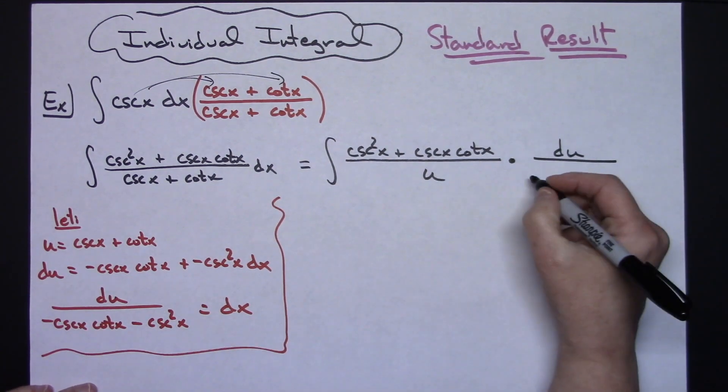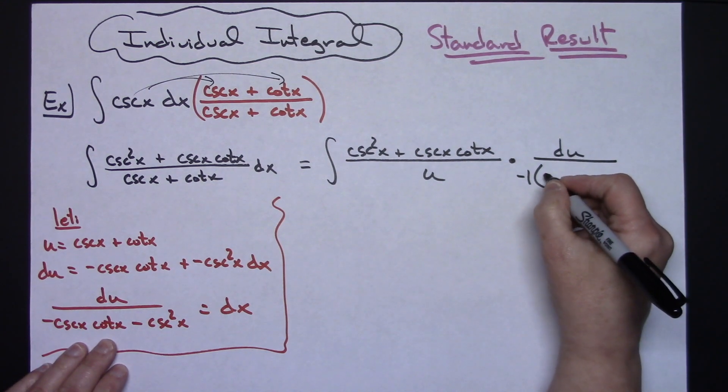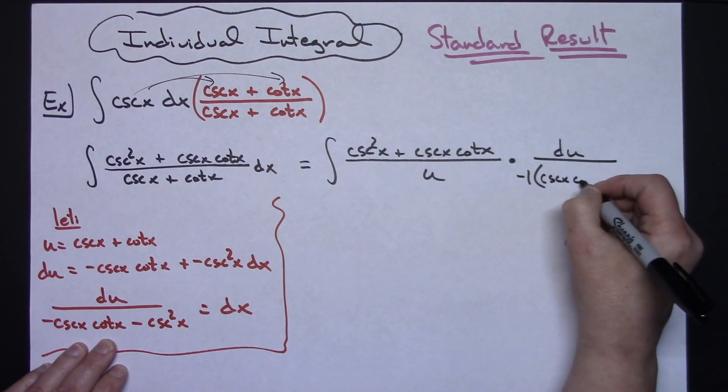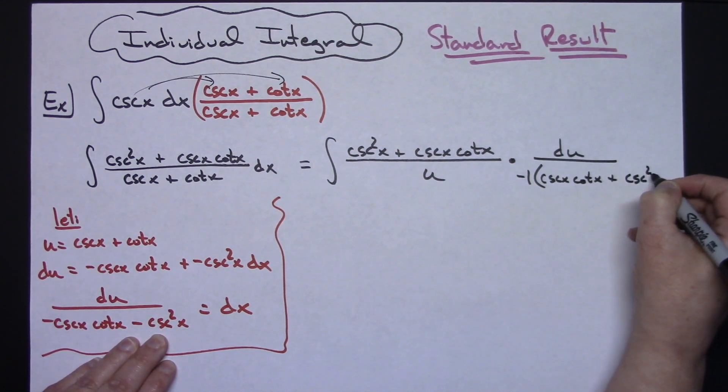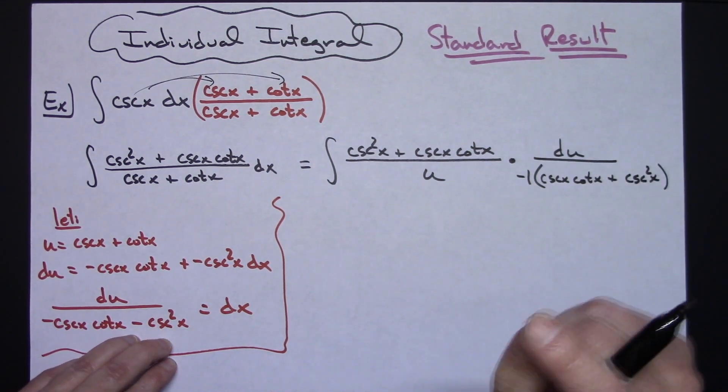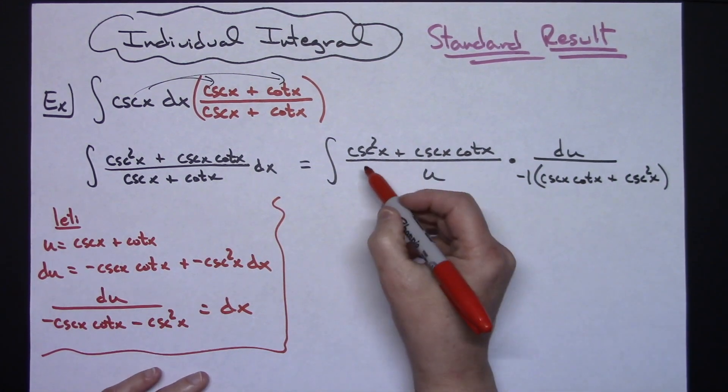I'll factor out negative one, leaving positive cosecant x cotangent x plus cosecant squared x. Factoring out the negative creates two terms that can be crossed out.